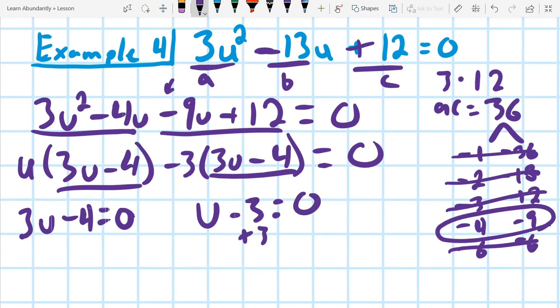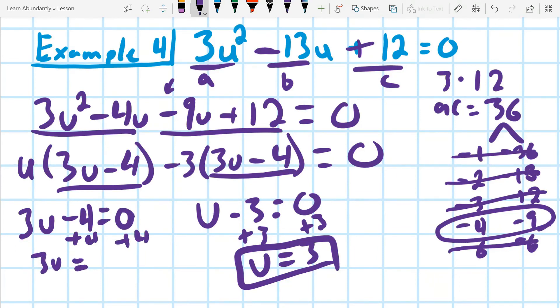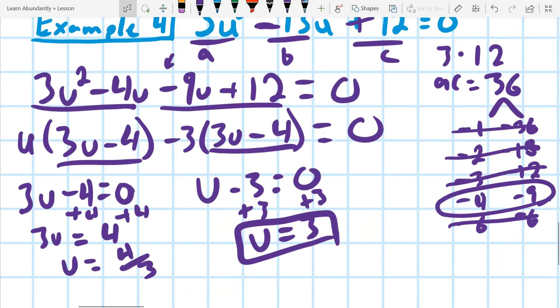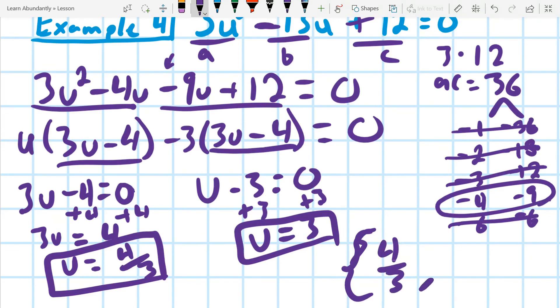When I do that, I'm going to add 3, add 3, and I get u equals 3. Okay, so I'm halfway there. The other side, I'm going to add 4, add 4, and I get 3u equals 4. Divide by 3 on both sides, and I get u equals 4 over 3. So I end up with my two answers. And I could write them as a set as 4 over 3 comma 3.